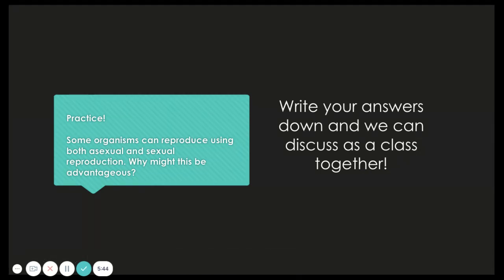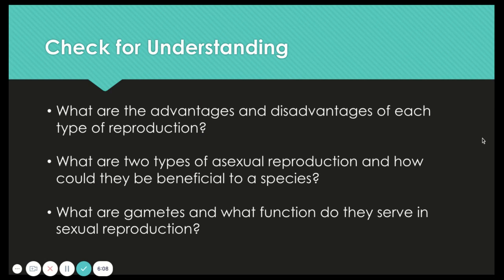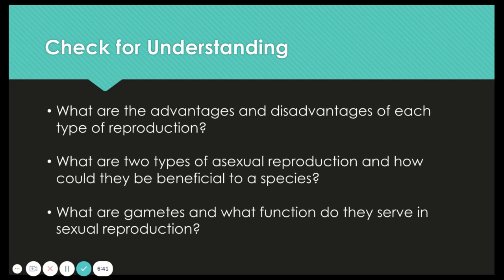Write down your answers on your note taker and then we can possibly discuss them as a class together. Some organisms can reproduce using both asexual and sexual reproduction — why might this be advantageous? We talked about parthenogenesis and sexual reproduction. Think about ways in which it might benefit a species to have the ability to do both, or cases where it might not be advantageous. As you listen to this lesson, make sure you can answer these questions: What are the advantages and disadvantages of each type of reproduction? What are the main types of asexual reproduction we discussed and how could they be beneficial? What are gametes and what function do they serve in sexual reproduction? If you have any other questions, reach out to your teacher or go back through the readings. Thanks.